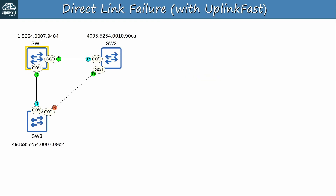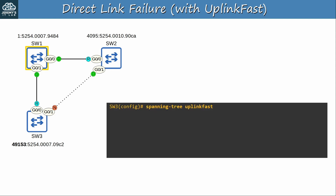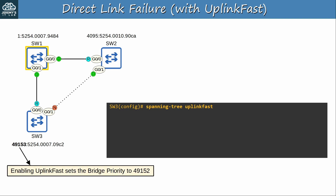I've re-enabled SW3 G0/0, so let's see how a direct link failure works with UplinkFast. I configured it on SW3 with 'spanning-tree uplinkfast'. Note that enabling UplinkFast sets the bridge priority to 49152 — which is 49153 on SW3 because of the extended system ID for VLAN 1. This is to ensure that the switch doesn't become the root bridge, which defeats the purpose of UplinkFast.